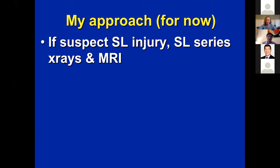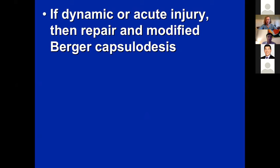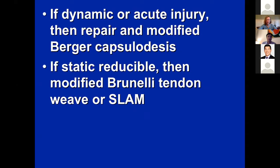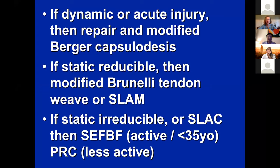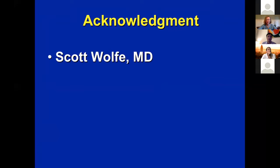My current approach: if I suspect scapholunate injury, I get a scapholunate series with bilateral clenched pencil view, MRI, splint, cortisone injection. If this fails, I go to scope, possible debridement for Geissler grade one or two. For dynamic or acute injuries, repair and some sort of capsulodesis. For static reducible problems, I'm currently doing modified Brunelli or SLAM, though I plan to try the ANAFAB once labs open. If static, irreducible, or SLAC, scaphoid excision with partial wrist fusion or PRC. In the end, scapholunate instability remains an unanswered problem in hand surgery.